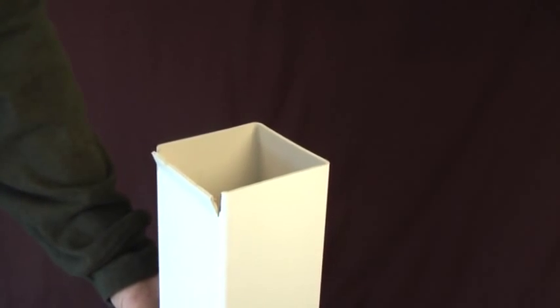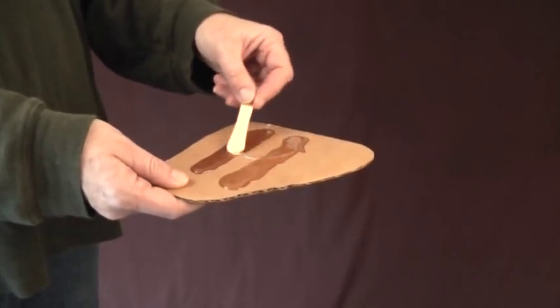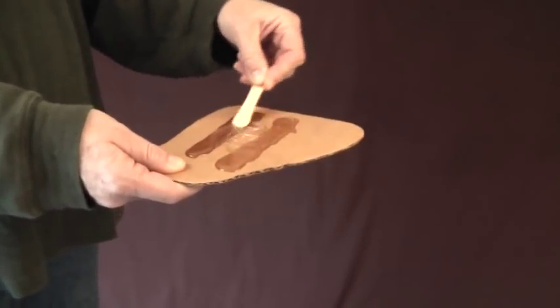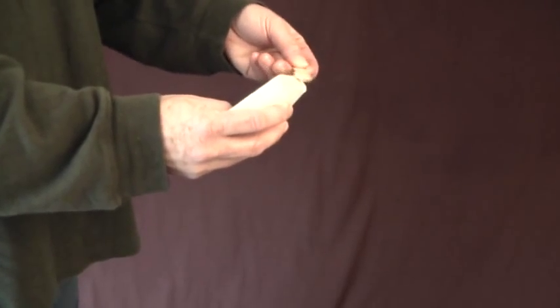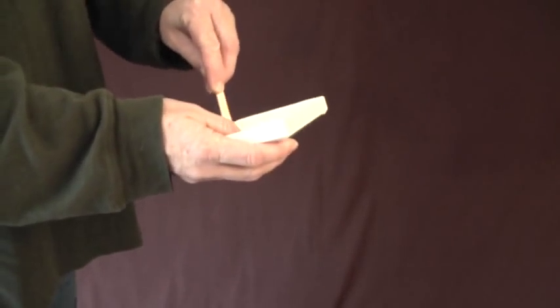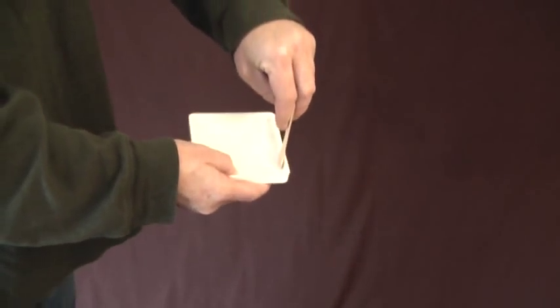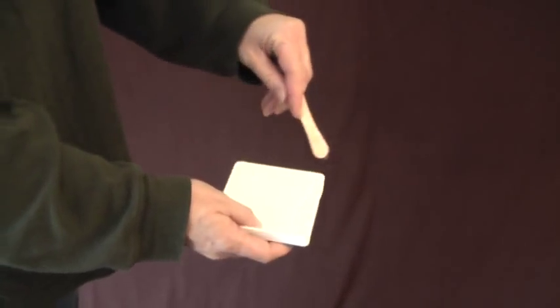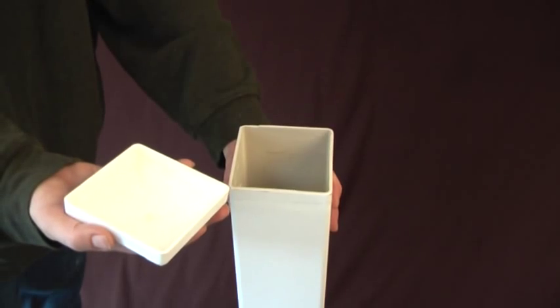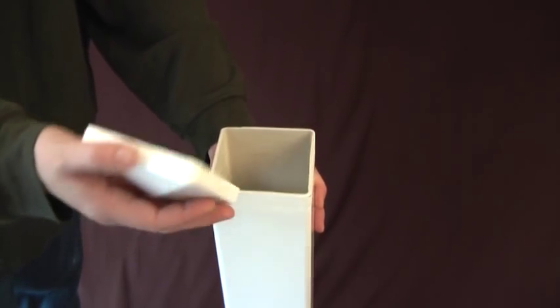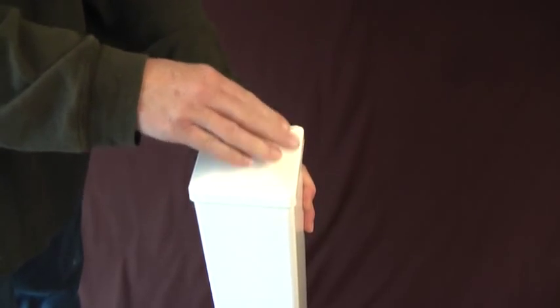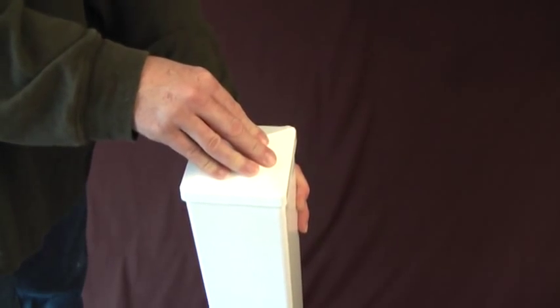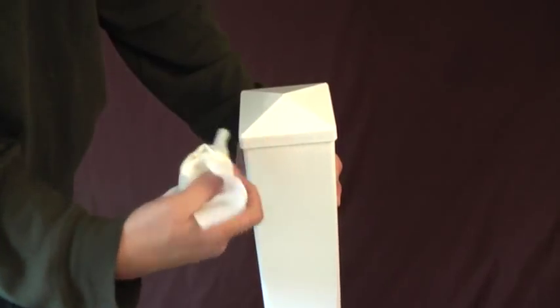The next step is to mix up some epoxy and apply a really nice bead to the inside of the end cap. Make sure you get it around really well. Apply the end cap to the fence post and clean everything up.